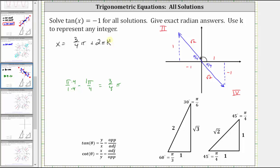Now let's focus on the least positive angle in the fourth quadrant. This angle equals 2π radians minus π/4 radians. With a common denominator of four, that gives us 8π/4 minus π/4, which is 7π/4 radians. And for all coterminal angles to 7π/4 radians, we have x equals 7π/4 plus 2πk.